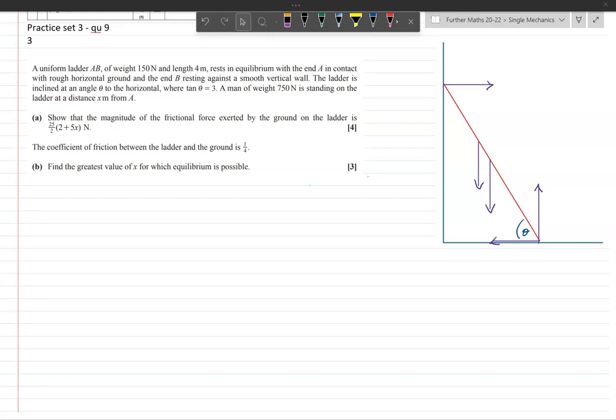Hello, in this video I'm going to go over an OCR A-level mechanics question from practice set 3, I think from 2018, question 9. It's a fairly classic scenario: a man walking up a ladder, and it's basically asking at what point will it slip. Very classic type mechanics question that's been around for many years.